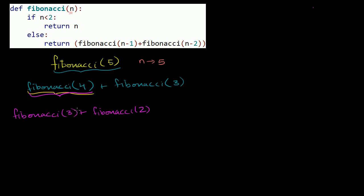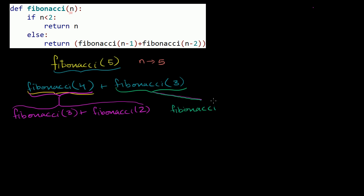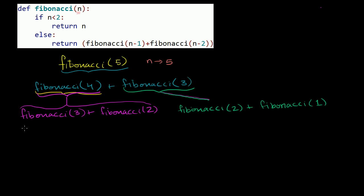So Fibonacci of 4 will return Fibonacci of 3 plus Fibonacci of 2. And then Fibonacci of 3 on the right: n is now 3, and 3 is not less than 2, so we go to the else — Fibonacci of 3 minus 1, which is Fibonacci of 2, plus Fibonacci of 3 minus 2, which is Fibonacci of 1. You can see how this is getting pretty involved. I'm going to start writing 'Fib' as shorthand so I don't run out of space.